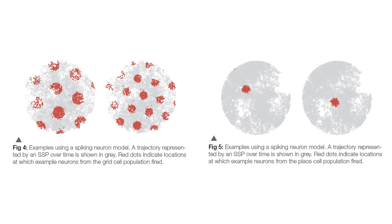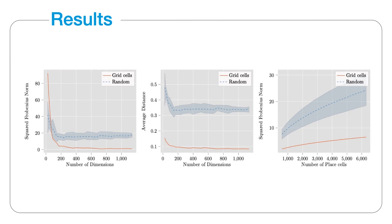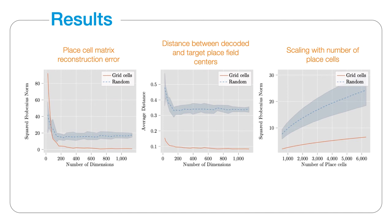We can also simulate these populations using models of spiking neurons. We compare how well the grid cell population decodes place cell output to the random basis vector population. We find that it achieves a lower squared Frobenius norm error and decoded place field centers are closer to the target centers. In addition, the grid cell population scales better as the number of place cells is increased, while the number of neurons in the SSP population remains constant, which makes the reconstruction task more difficult.